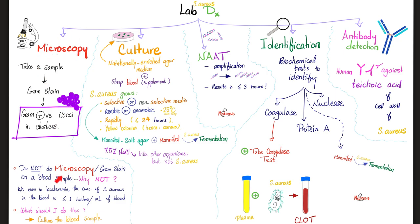For blood samples where bacterial concentration is too low for microscopy, you should culture the blood. Provide the bacteria with a nourishing medium so they can grow and multiply. Instead of one cell, you will have a gazillion cells visible beautifully on the culture.